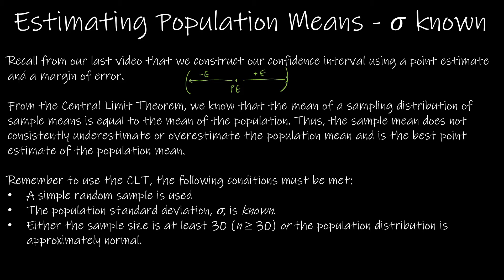As we work through estimating population means where sigma is known or sigma is unknown or estimating population proportions, the only difference is going to be how do I determine my point estimate and how do I determine my margin of error, as well as what are the restrictions.